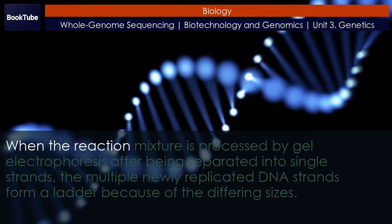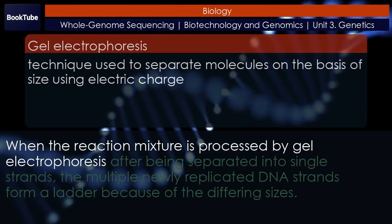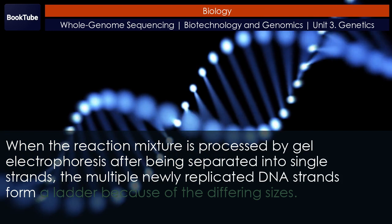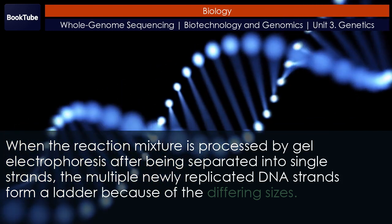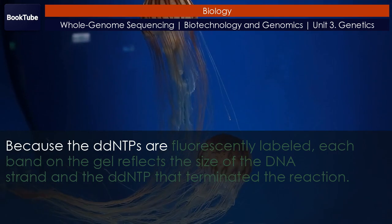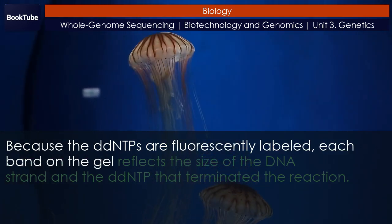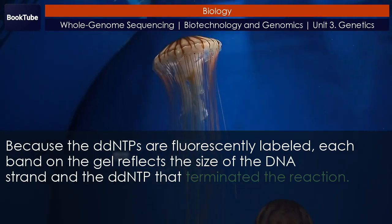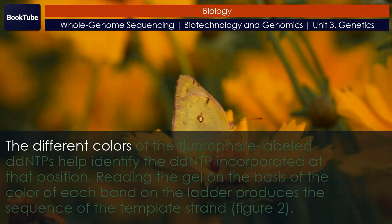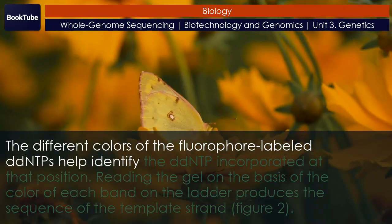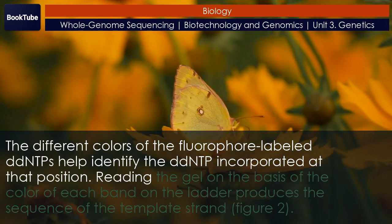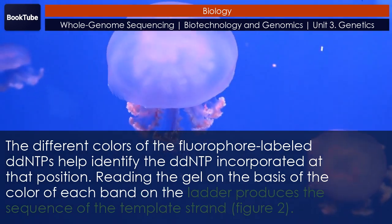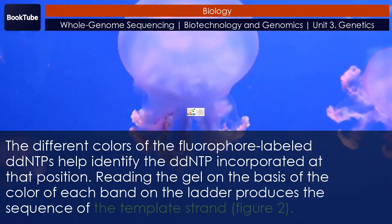When the reaction mixture is processed by gel electrophoresis after being separated into single strands, the multiple newly replicated DNA strands form a ladder because of the differing sizes. Because the ddNTPs are fluorescently labeled, each band on the gel reflects the size of the DNA strand and the ddNTP that terminated the reaction. The different colors of the fluorophore-labeled ddNTPs help identify the ddNTP incorporated at that position. Reading the gel on the basis of the color of each band on the ladder produces the sequence of the template strand.